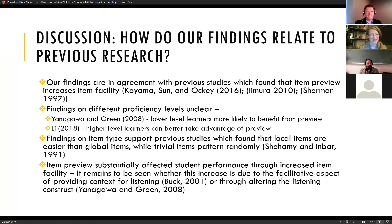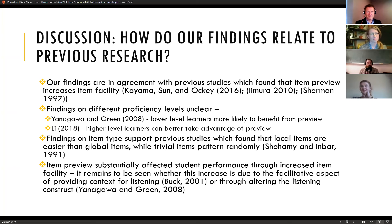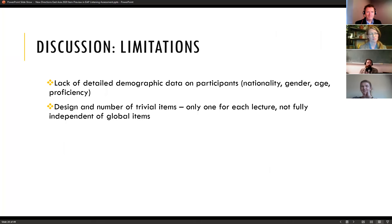We found support for previous studies showing that local items do seem to be easier than global items. Trivial items just seem to pattern randomly, which is expected since they're not based on any main idea or important element from the lecture. We still don't know whether the increase in student performance with item preview is because it provides context for listening, or whether it actually alters the listening construct and measures something different. We also wish we had more detailed demographic data on participants. The design and number of trivial items may have affected results — there was only one per lecture and they seemed more closely connected to global items than intended.